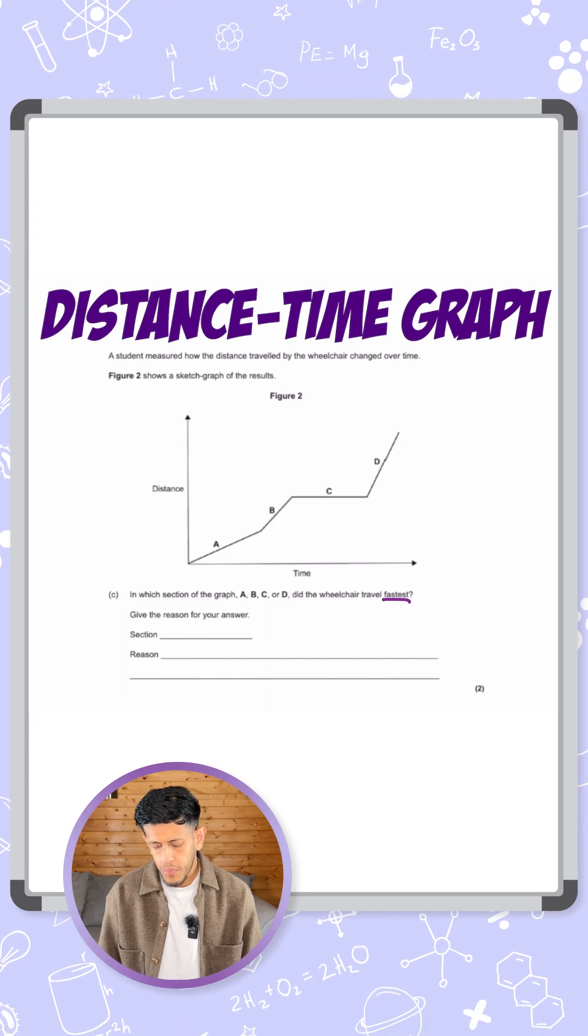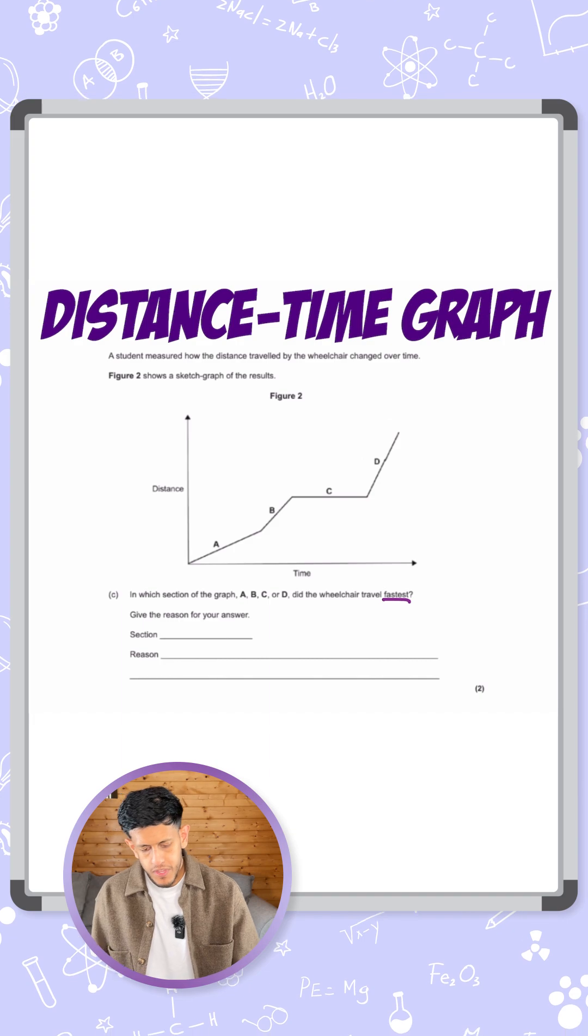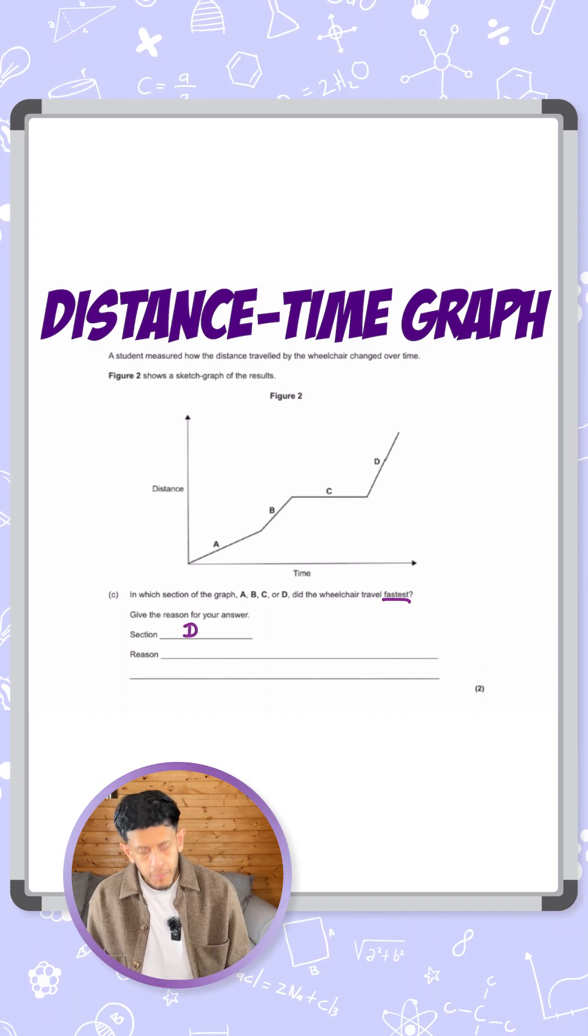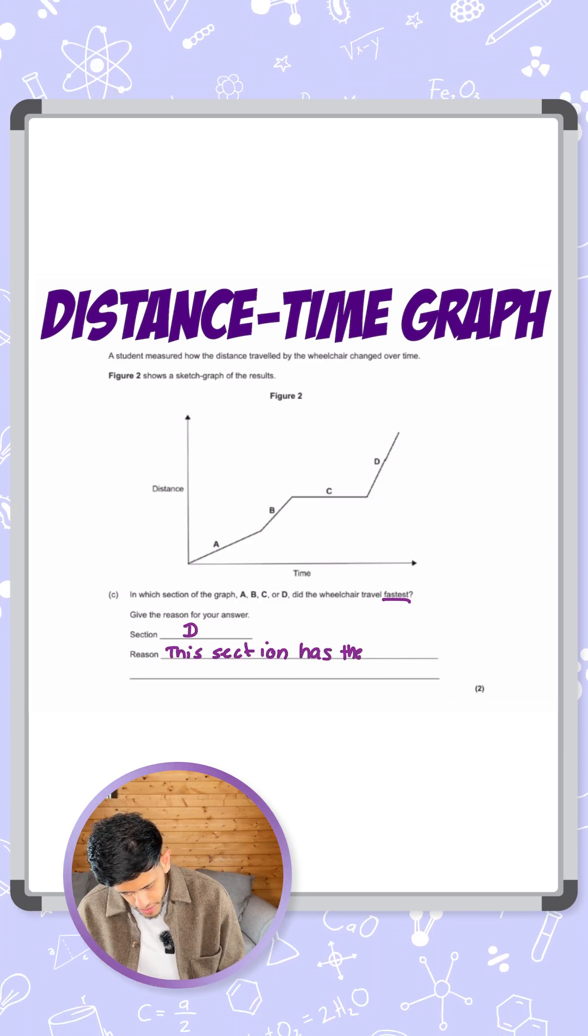So clearly the one that sticks out as having the largest gradient is the steepest line here which is section D. So my answer I'm simply going to put in here section D and my reasoning is simply because this section has the largest gradient.